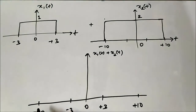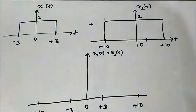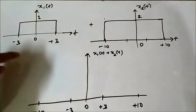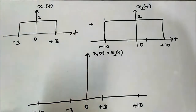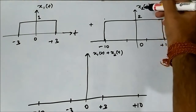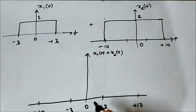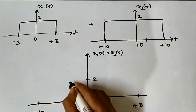In between the intervals from minus 10 to minus 3 and from plus 3 to plus 10, x1(t) is 0 — only x2(t) is present with its amplitude. So in those two intervals, the value of the added signal will be 0 plus 2, which equals 2.